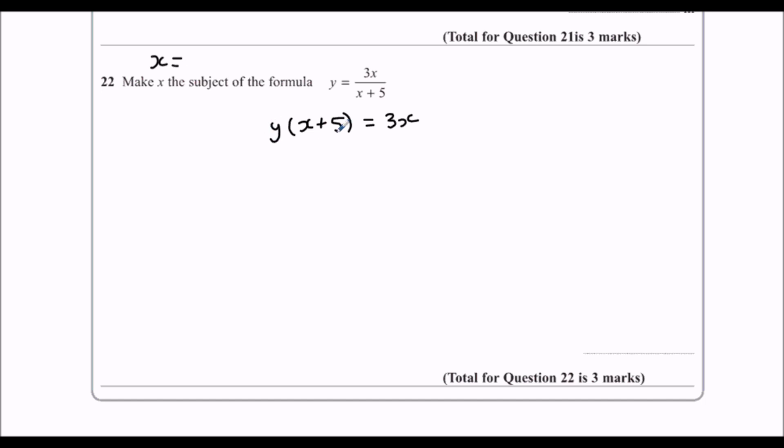I'm going to expand the bracket, so x times y is xy and y times 5 is 5y. I need to get both the x's on the same side. I'm going to take the xy over to the right side, so I'm going to minus xy from both sides.